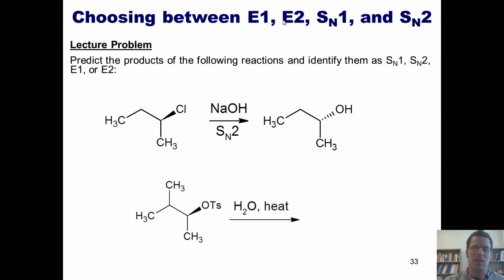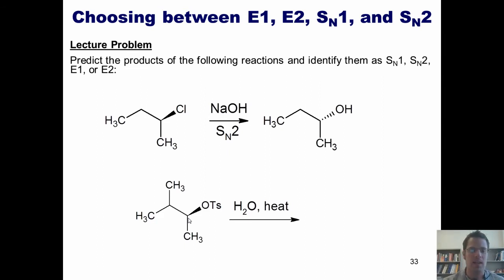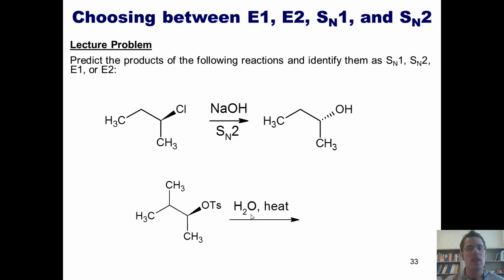In this example, we go through the same three questions. Is my leaving group — this tosylate group — stuck to a primary, secondary, tertiary, or stabilized carbon? It is secondary, which means it could be any of the above. Next question: is my nucleophile/base strong or weak? It's water, which has no localized negative charges. Thus, it is weak, meaning it's going to proceed through either an SN1 or E1 reaction mechanism.